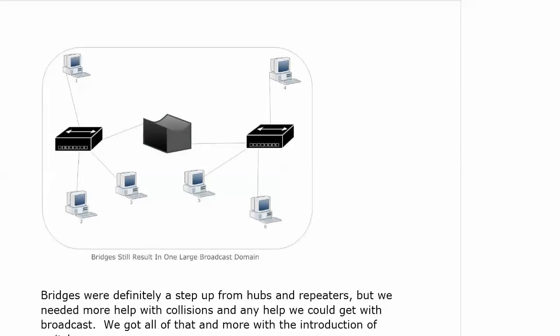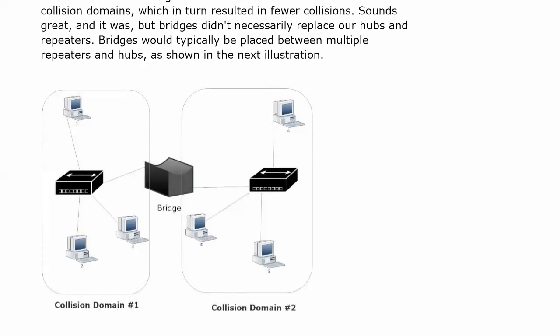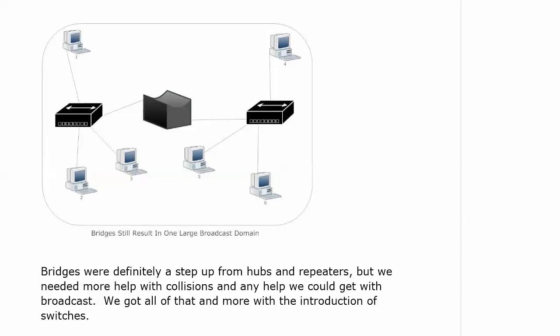Because bridges, as far as the broadcast goes, it still results in one large broadcast domain. Our collision domains — that's what we get with a bridge. We get multiple collision domains. But with a broadcast domain, we've still got one giant broadcast domain. So obviously, a huge step up from hubs and repeaters, but we need some more help with collisions, because having smaller collision domains is good, but we can always get better. And we could use any help we can get with broadcast.